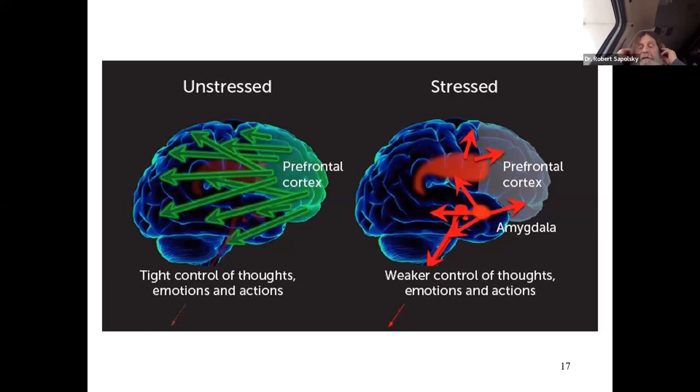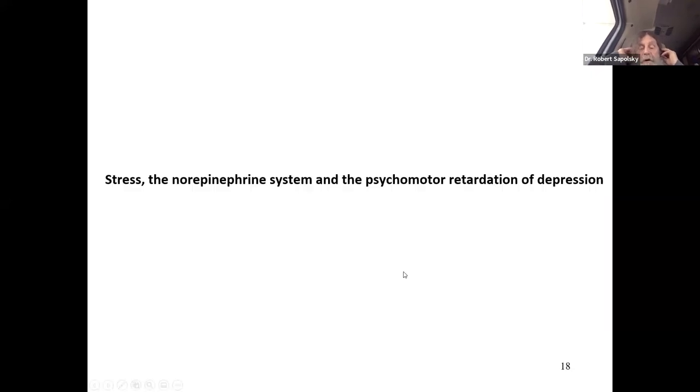Next slide shows the third neurotransmitter we need to worry about, one called norepinephrine. What norepinephrine is central to is... dopamine, the loss of pleasure, the loss of anticipation; serotonin loss and rumination.